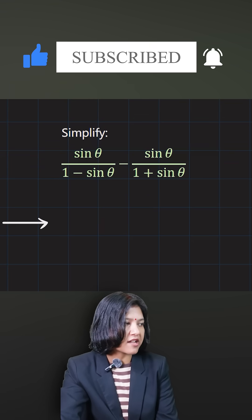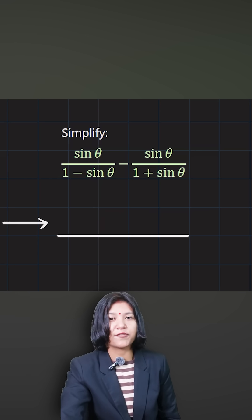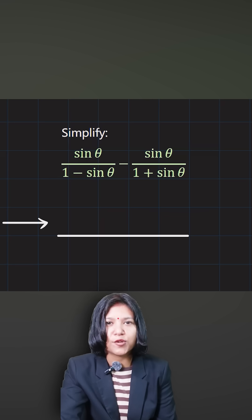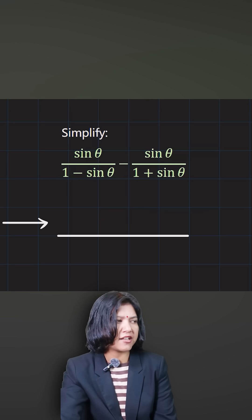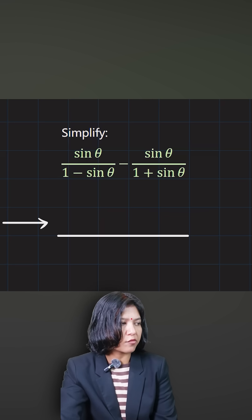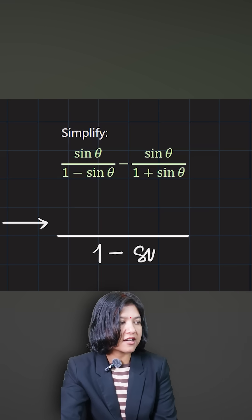The denominators are (a + b) and (a − b), which are in the form of a sum and a difference. Their product, using the algebraic identity, is always equal to the difference of two squares: a² − b². So the product here is 1² − sin²θ, which is 1 − sin²θ.